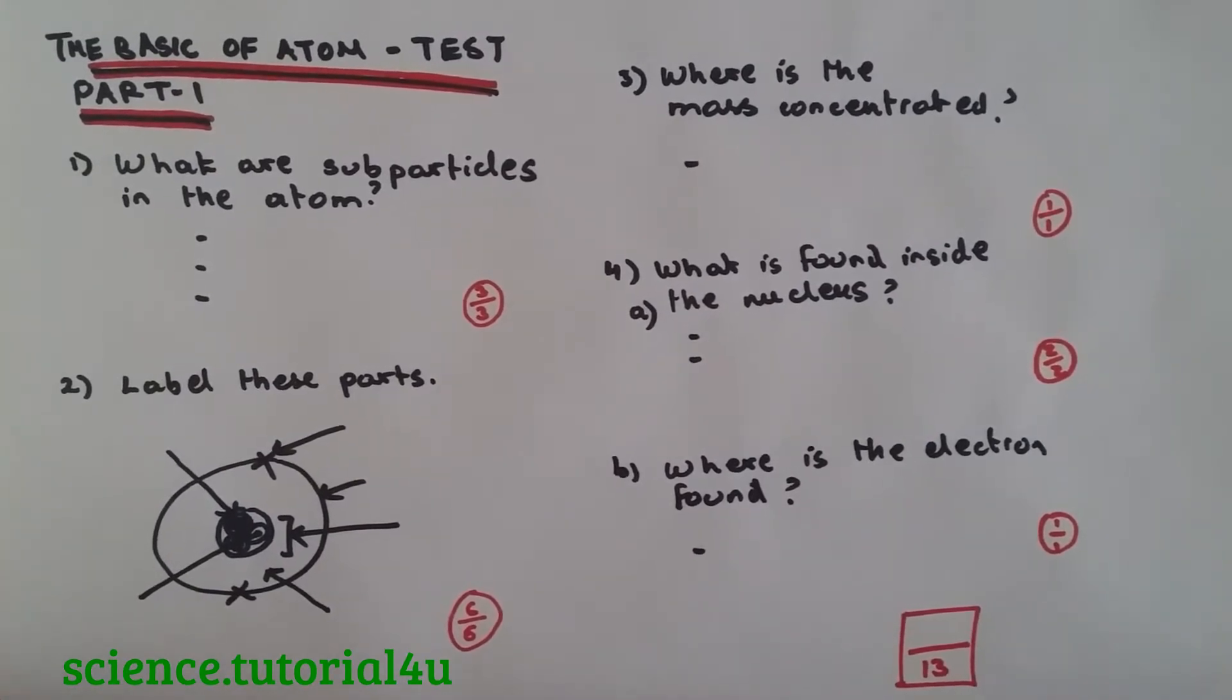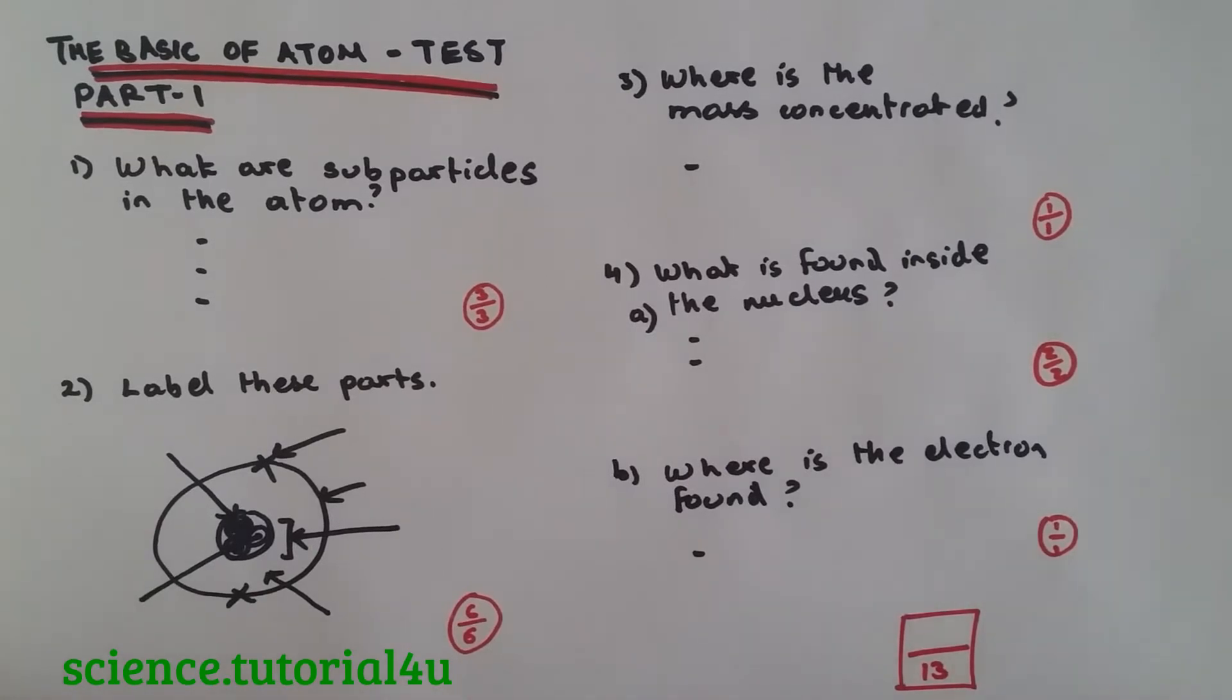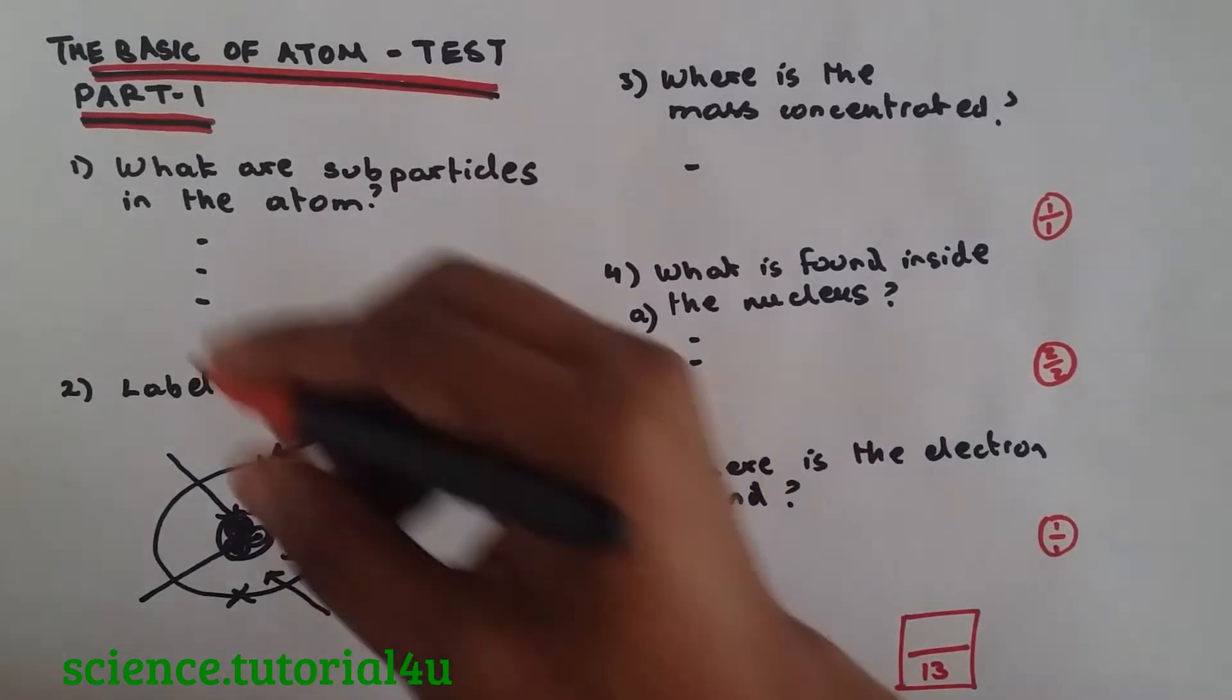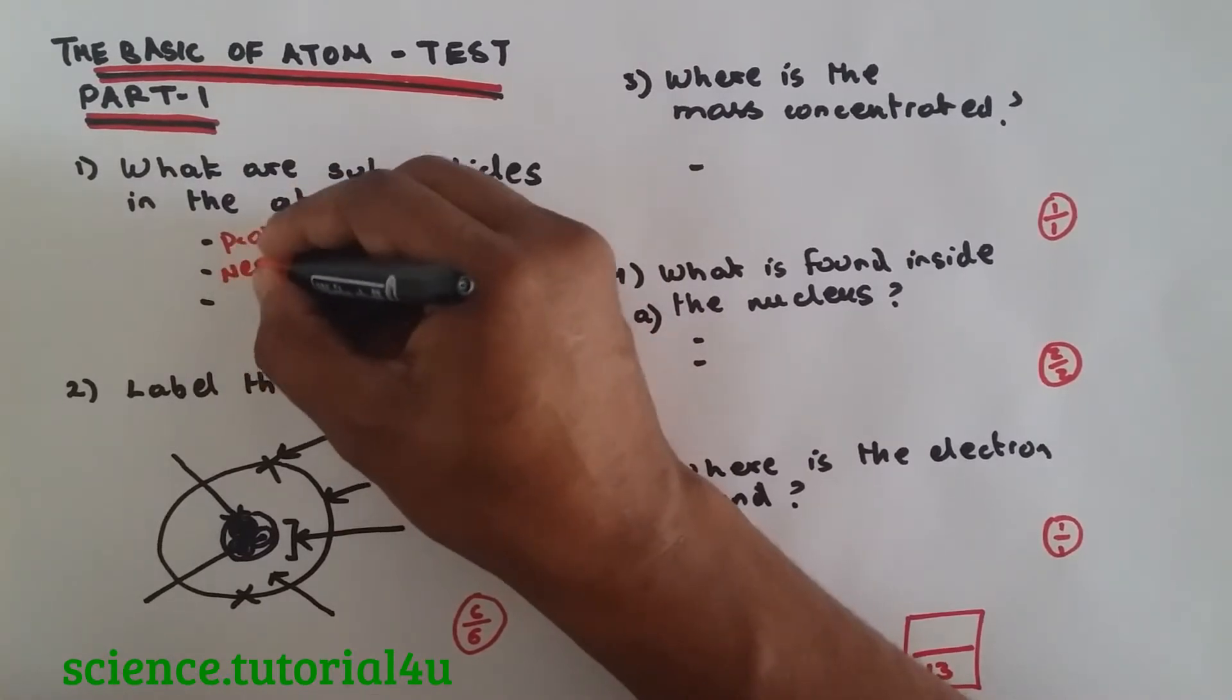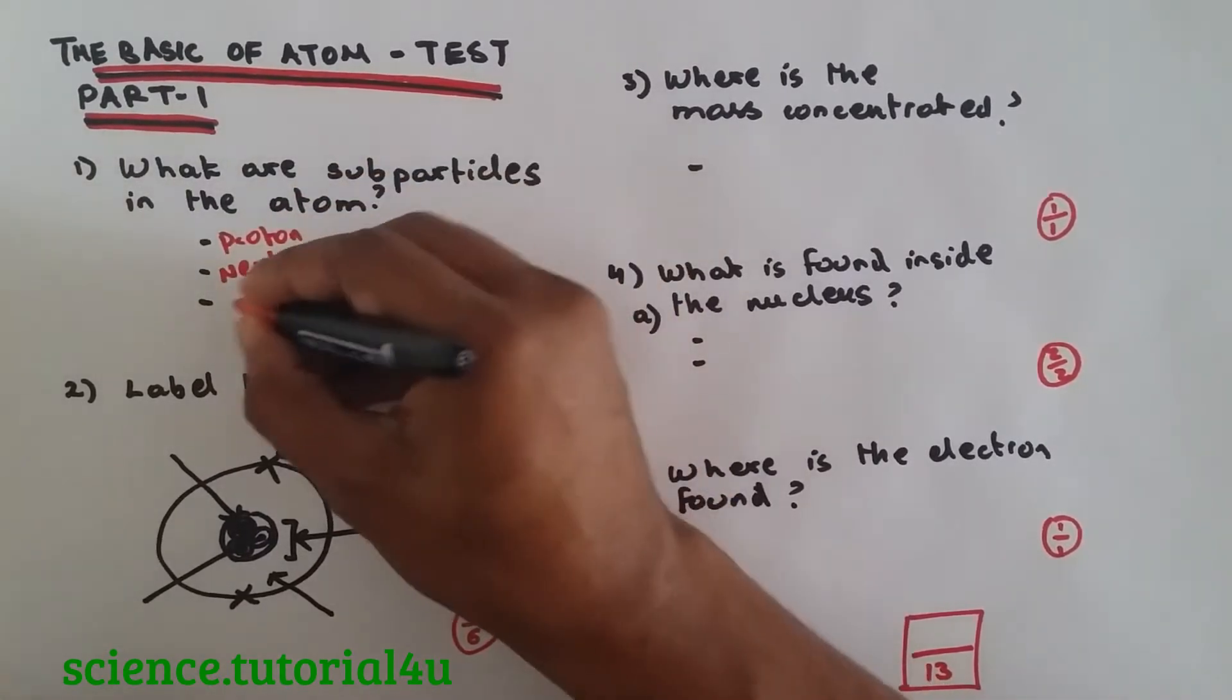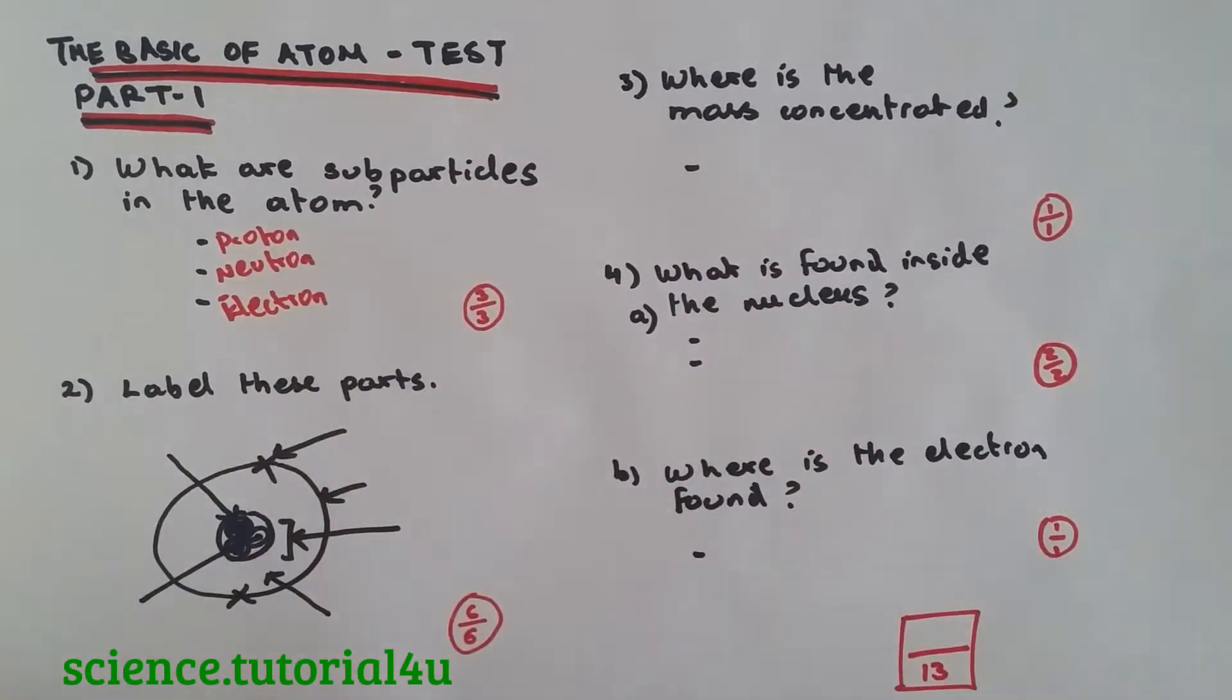What are subparticles in the Atom? These are Proton, Neutron and Electron. If you got it right, well done.